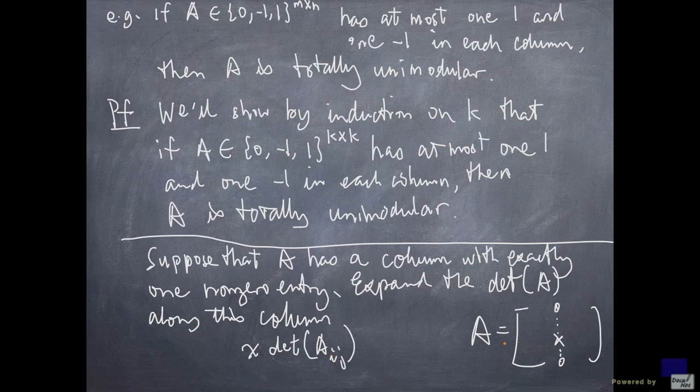where the matrix Aij is the matrix A with i-th row and j-th column deleted. And we are interested in the absolute value because all we need to show is that this is 0 or 1.